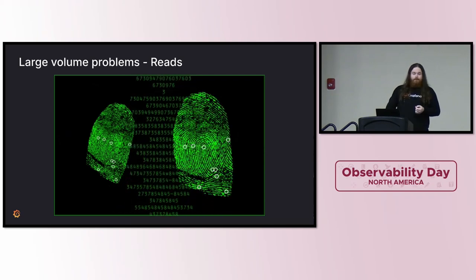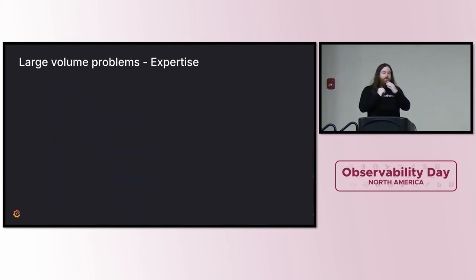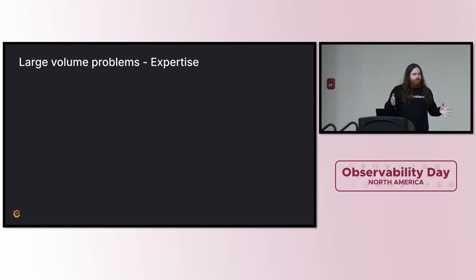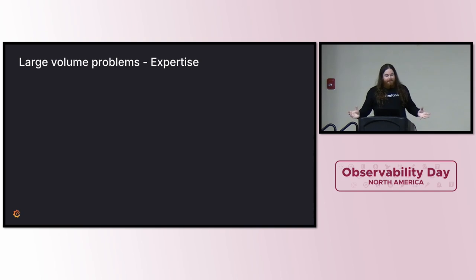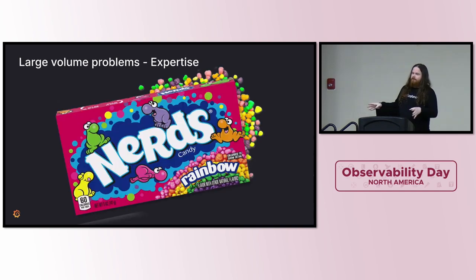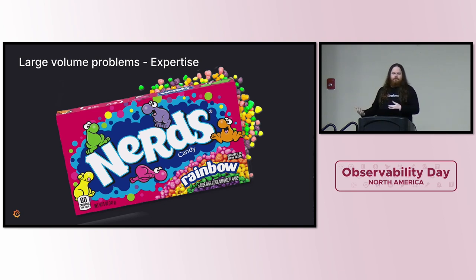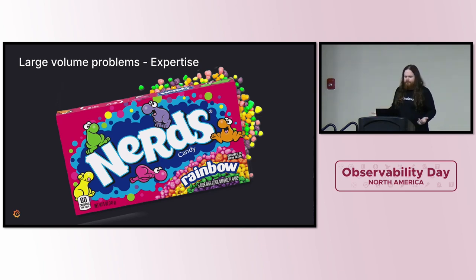The fourth problem is expertise. The larger your telemetry volumes, the larger the systems you have to run to handle them — massive clusters, too many clusters, or both. All of this requires more expertise, so you end up hiring more specialized engineers at immense cost, or you pay a vendor to take the problem off your hands. But those massive volumes are still going to cost you, since any SaaS observability vendor charges by volume anyway.